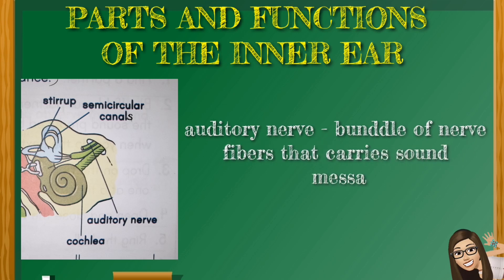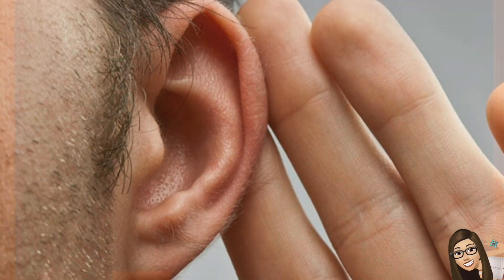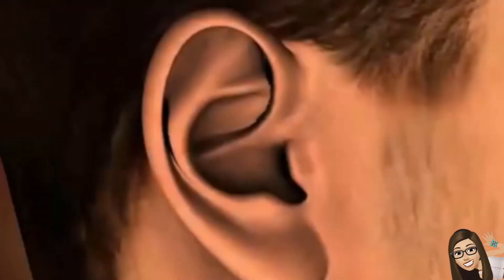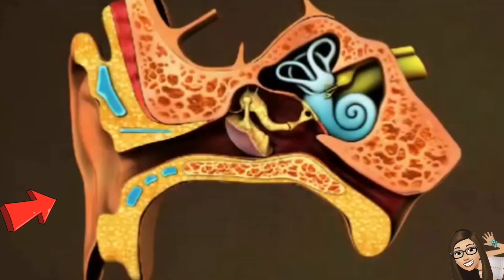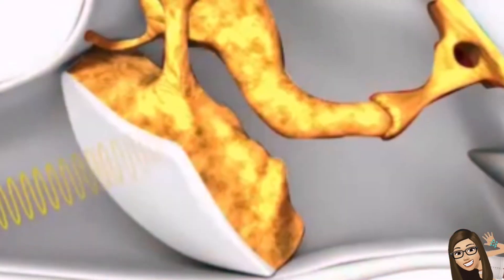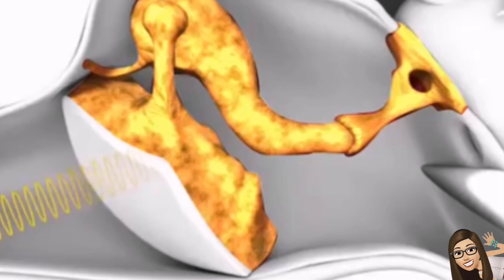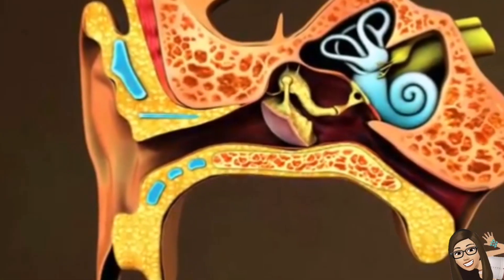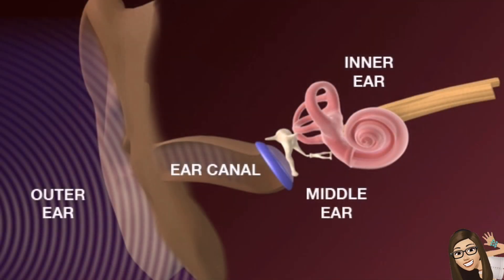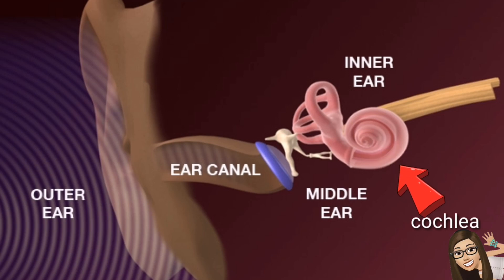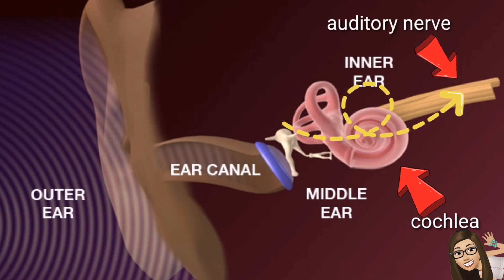The auditory nerve is a bundle of nerve fibers that carries sound messages to the brain. How does the ear work? The outer ear catches the sound waves. The sound waves pass through the ear canal and hit the eardrum. The eardrum vibrates, causing the hammer, anvil, and stirrup to also vibrate. Sound is then delivered to the cochlea, where vibrations make the fluid travel like ocean waves. The changes in sound are picked up by the auditory nerve and sent to the brain, which then recognizes and interprets the sound heard.